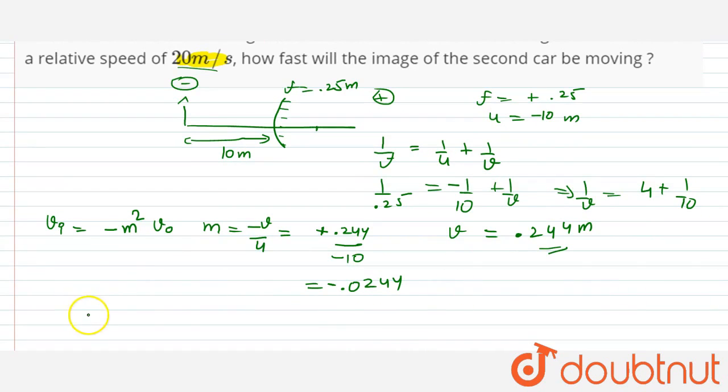The velocity is magnification squared, 0.0244 whole square into 20 meter per second. And this means minus.